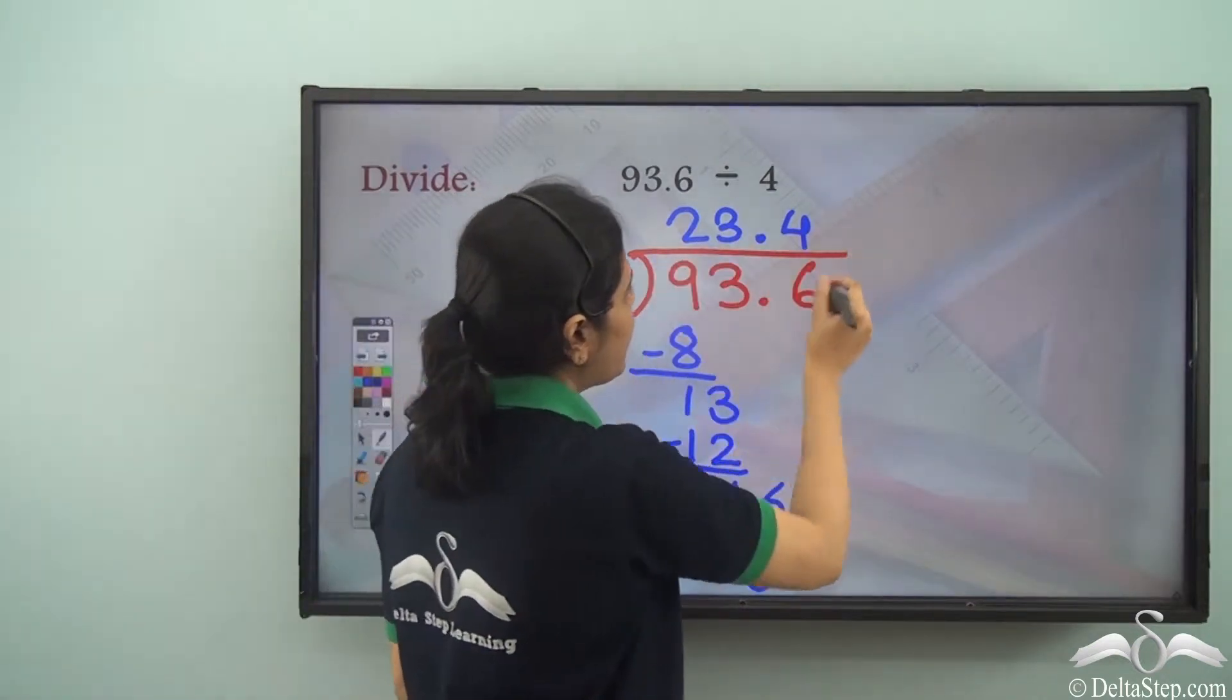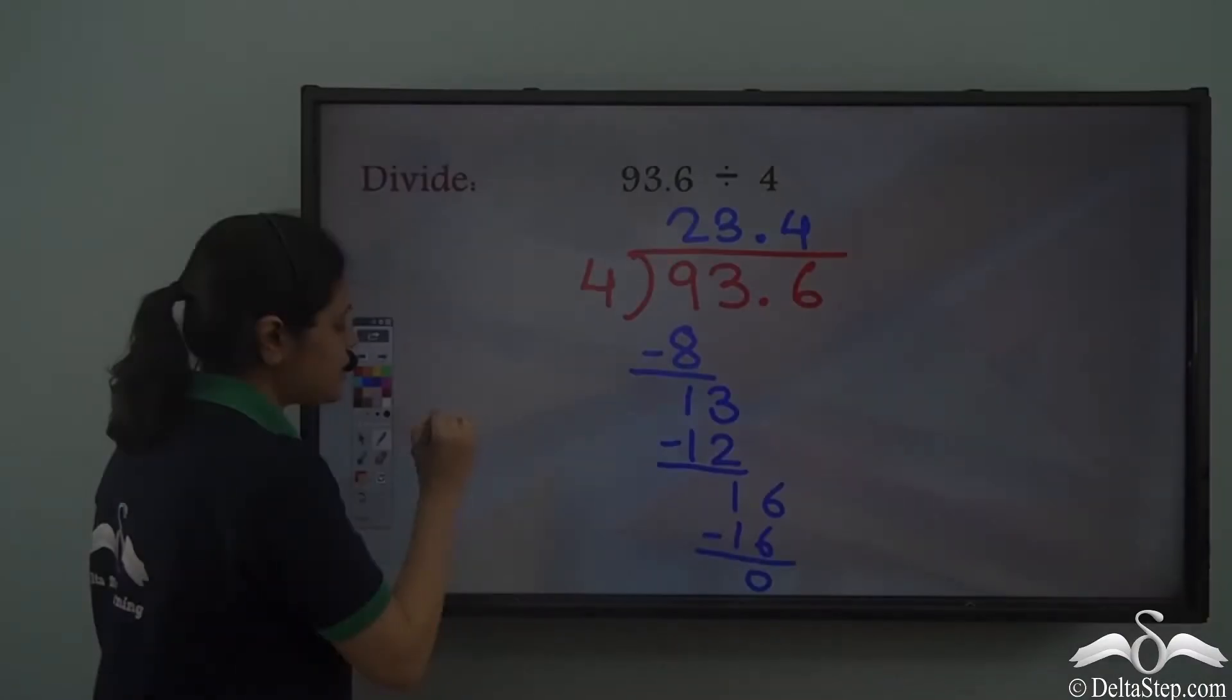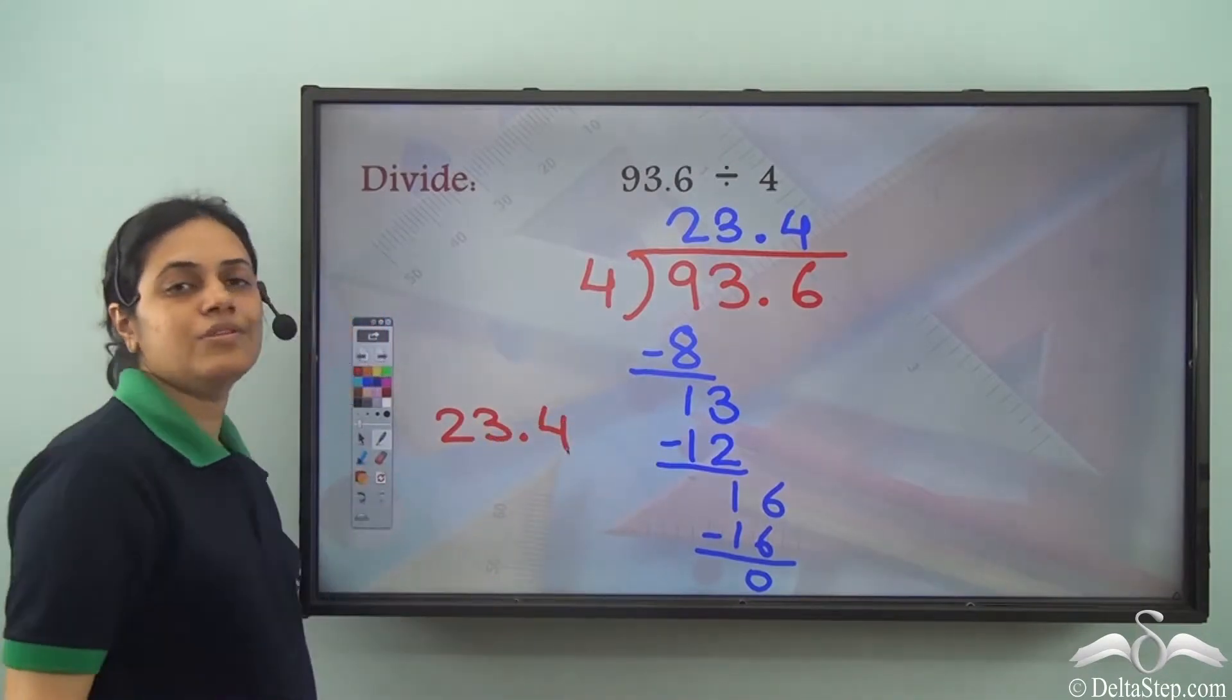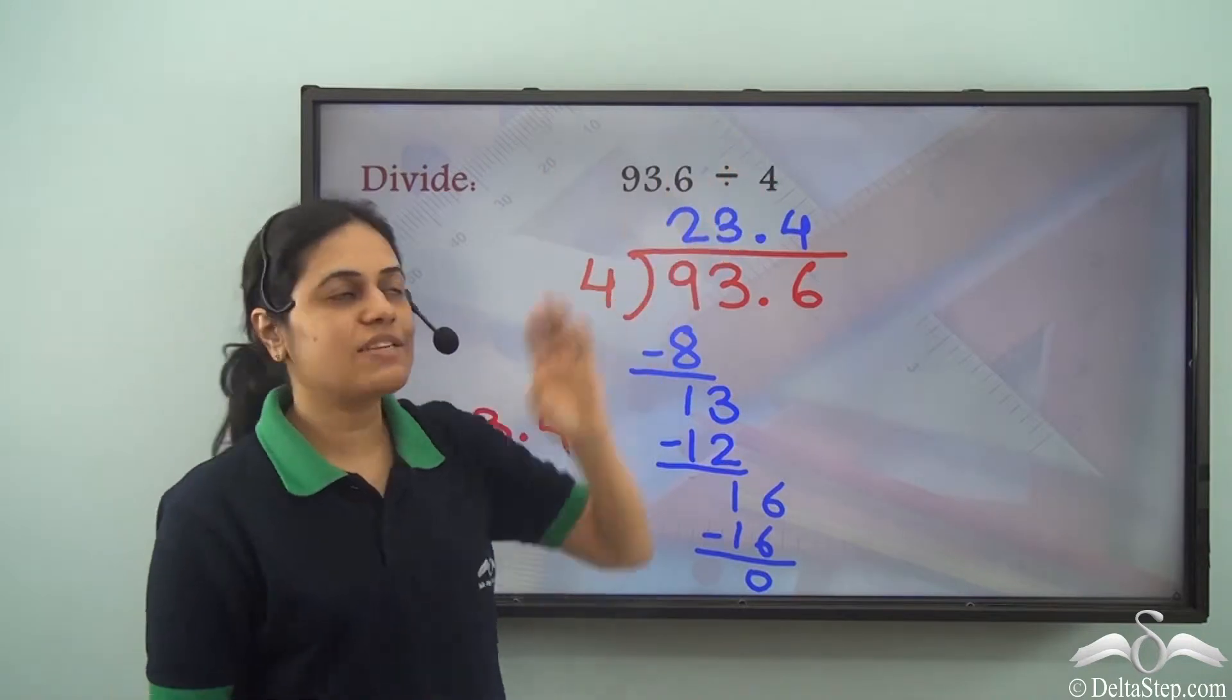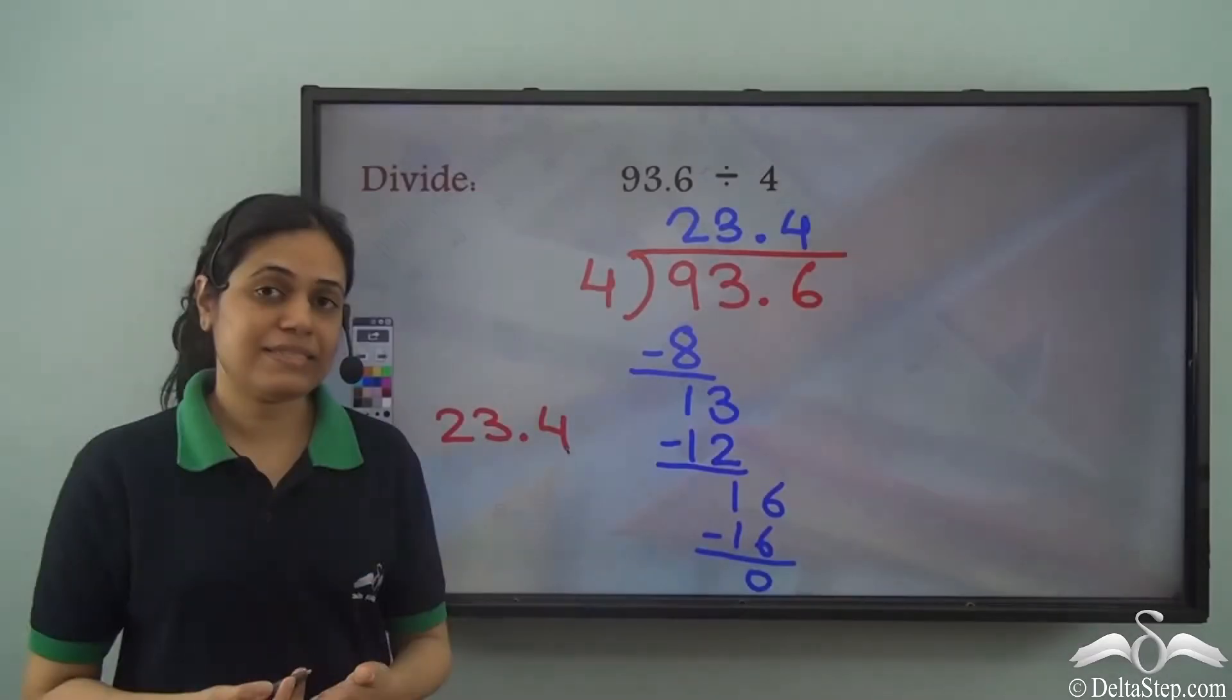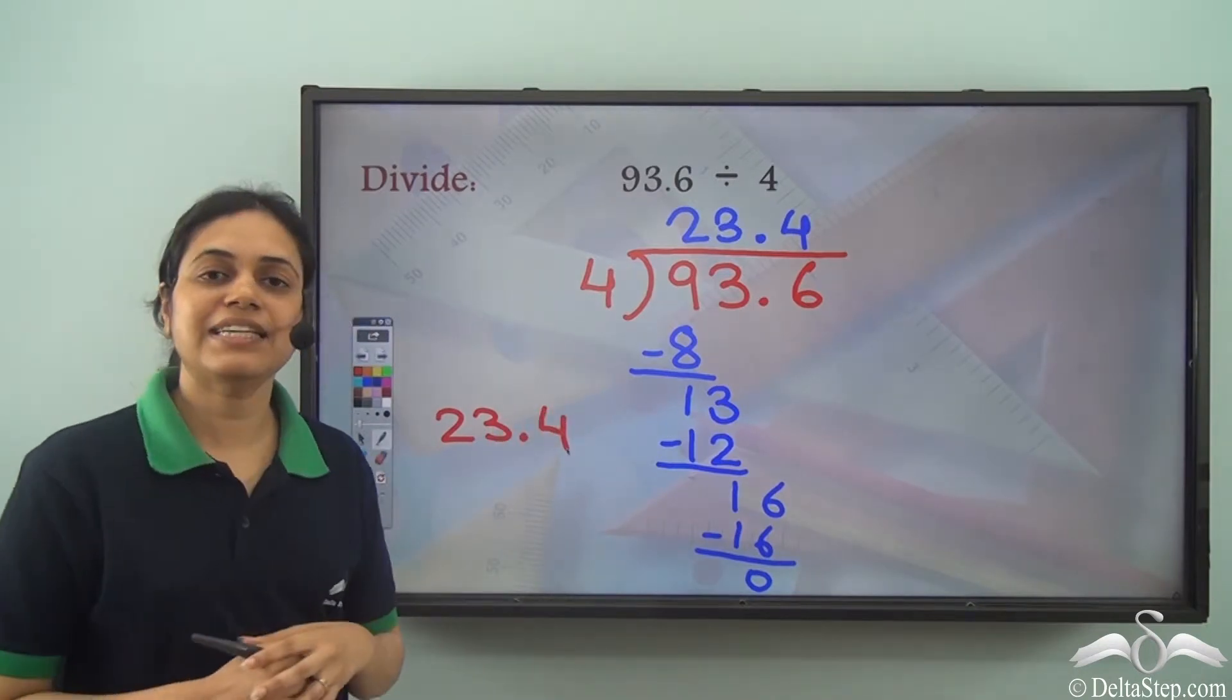So this is what we have. 23.4 is the answer of this division. So 93.6 divided by 4 gives us 23.4 and this is how we can divide decimal numbers.